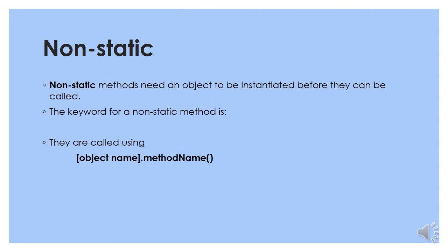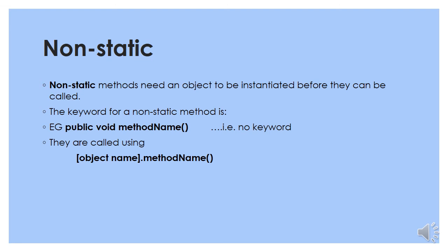Non-static methods do need an object to be instantiated before they can be called. There is no keyword for a non-static method — we just write public void methodName(), and they are called using the objectName.methodName().